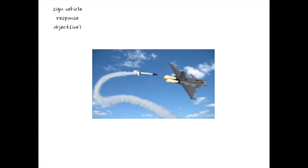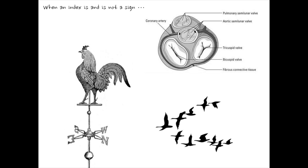This is a heat-seeking missile going after an aircraft. What is the sign vehicle? What is the response? What is the overall objective of this machine? You can look at this from the point of view of the aircraft pilot or the person launching the missile. This is a complicated example, and it's offered to introduce the concept of triadic sign structure in a technological context.